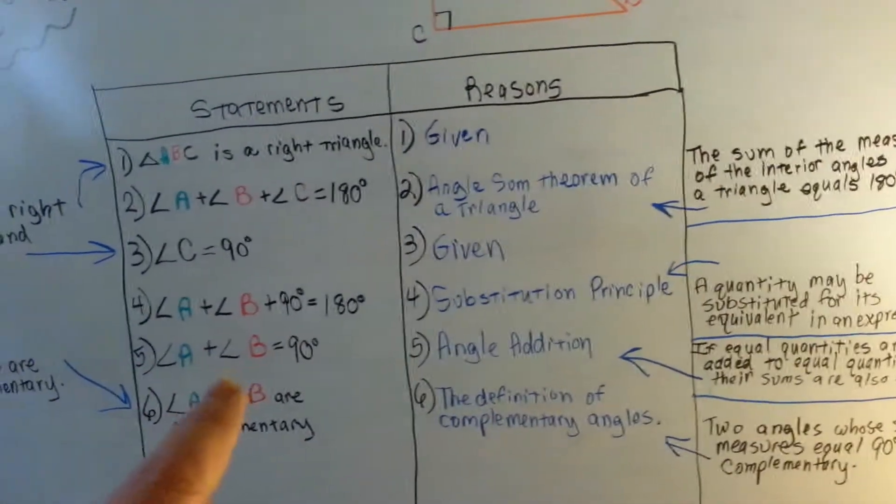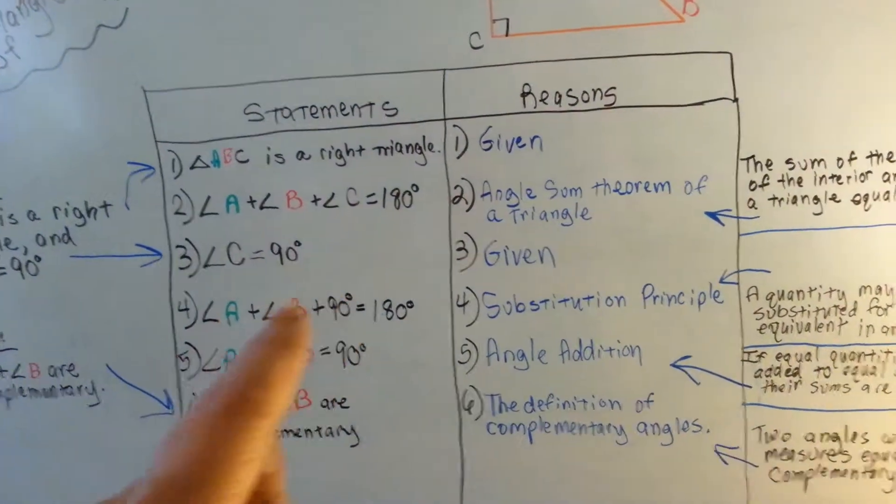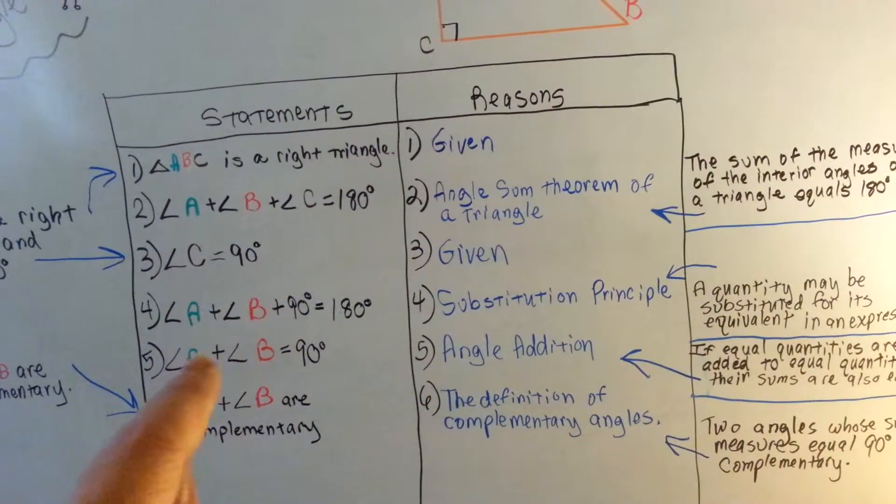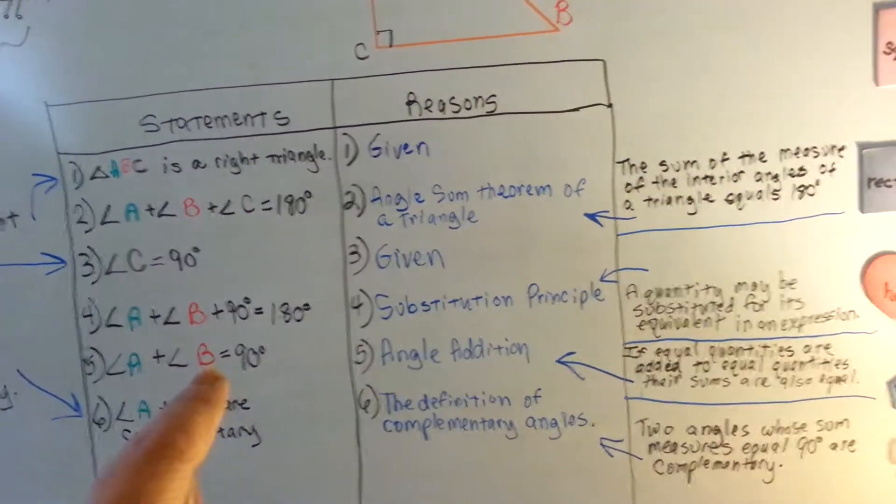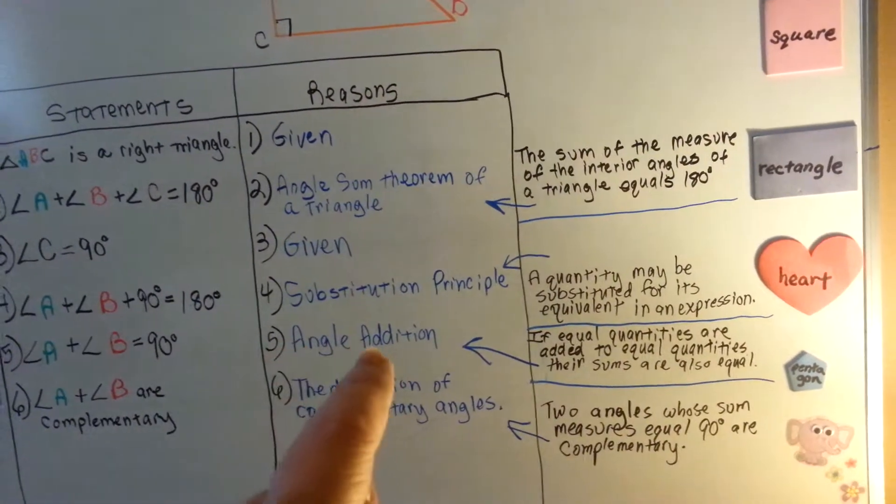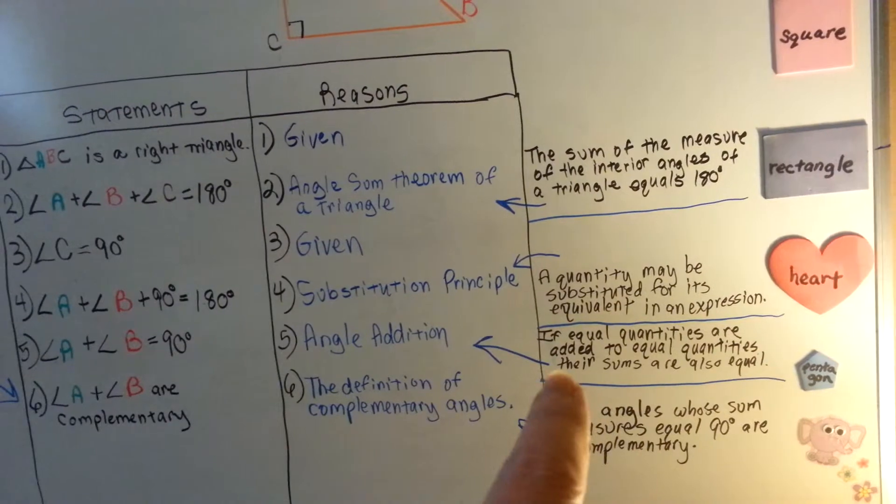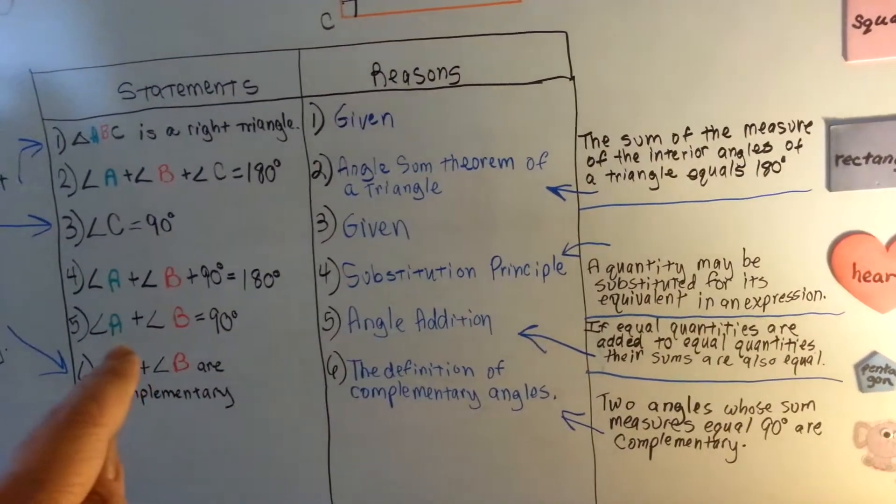So now that we've proven that A and B have to be 90 because that's 90, we state it here. Angle A plus B is equal to 90 and our reasoning is angle addition, which says if equal quantities are added to equal quantities, their sums are also equal. Okay?